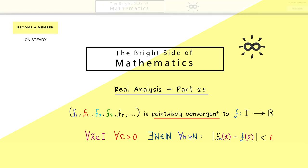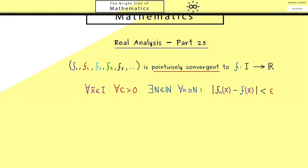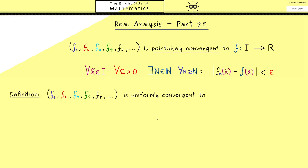And indeed, this is the only thing we will change to get the uniform convergence. So we call a sequence of functions uniformly convergent to f if for all ε > 0 there exists a capital N such that for all indices n ≥ N and for all points x tilde in I, we have that the distance between the values is less than epsilon.